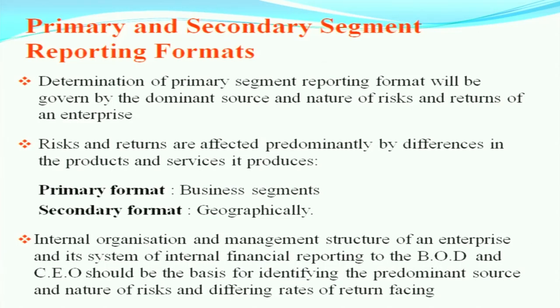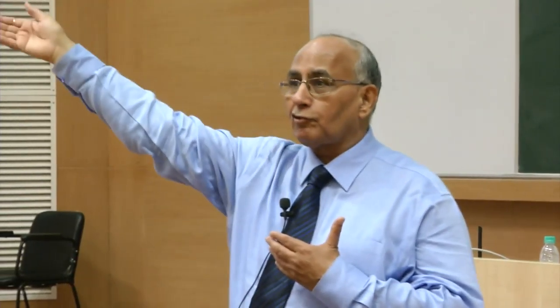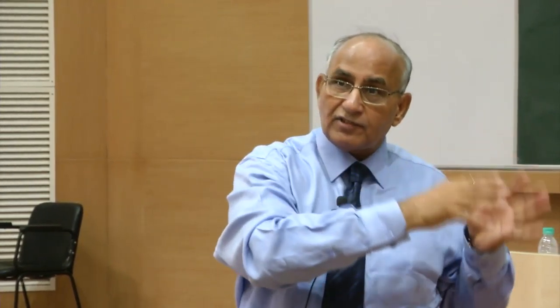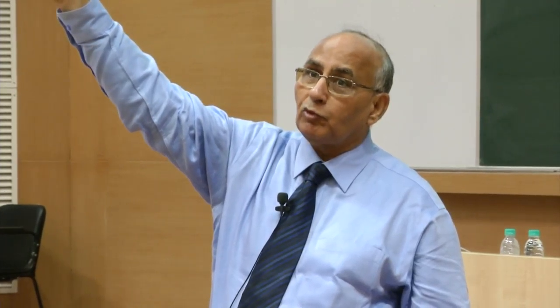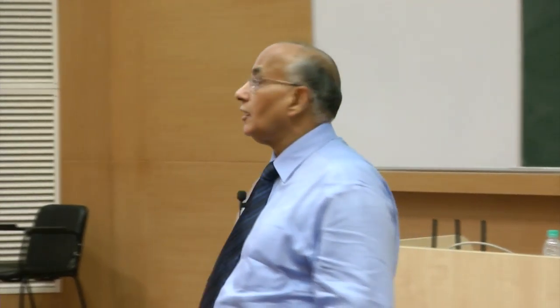Where risks and returns are affected predominantly by differences in products and services, the business segment is the primary segment. In the case of educational institutions, it is the product — the type of course — that creates the risk. So in almost all cases, business segment will be the primary segment, unless you have universities abroad, educational institutions abroad, or franchises abroad where receipts from franchises exceed domestic receipts — in that case, geographical segment assumes greater significance.